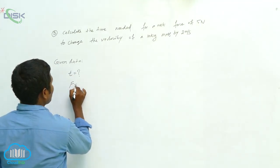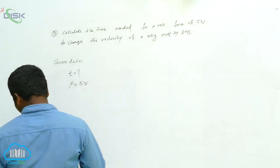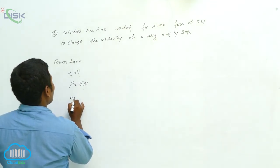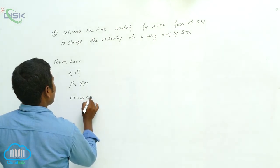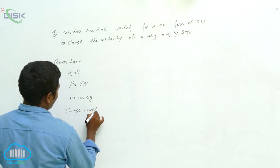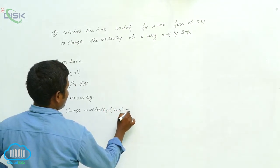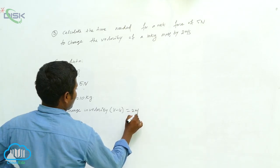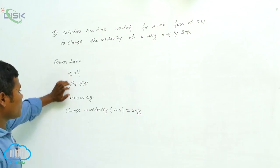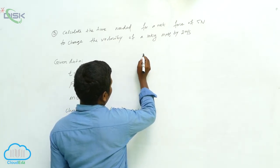Net force F is equal to 5 Newtons. Mass m is equal to 10 kg. Change in velocity is 2 meters per second. So t is what we are asking. F and m and change in velocity are all given. According to Newton's second law: